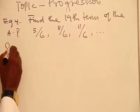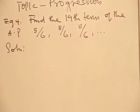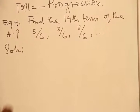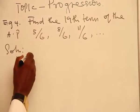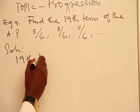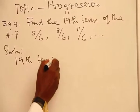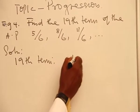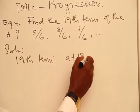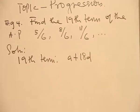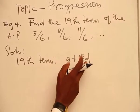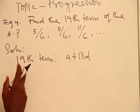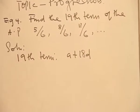Solution: We are looking for the 19th term of an AP, so you write the general form of the 19th term, which is A plus 18D. I have already explained to you that the coefficient of D is always 1 less than the term they are referring to.